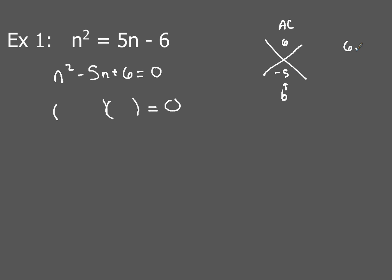Now you can go ahead and list the factors of 6. So 6 and 1, negative 6 and negative 1. We've got 2 and 3, and negative 2 and negative 3.